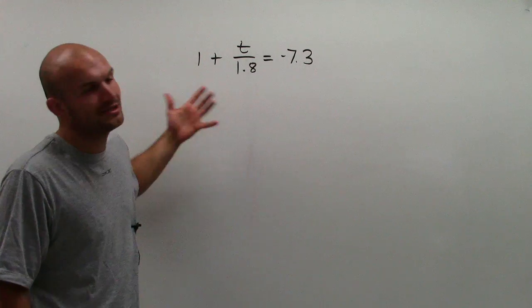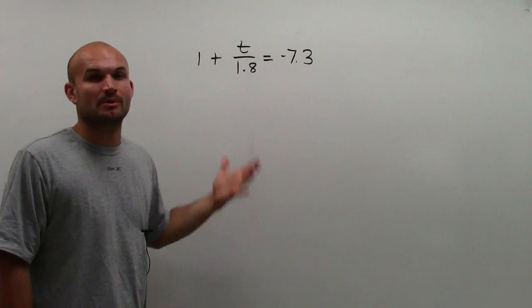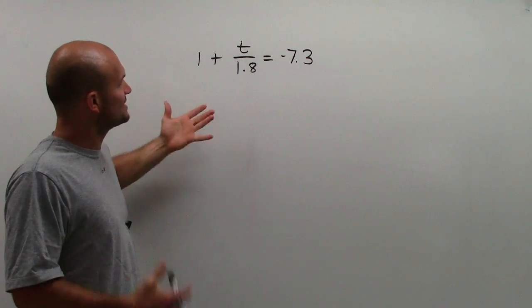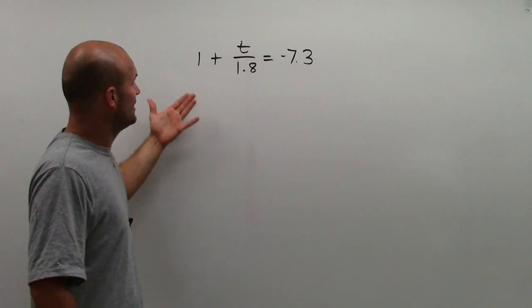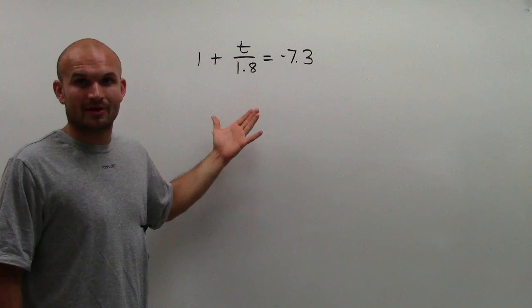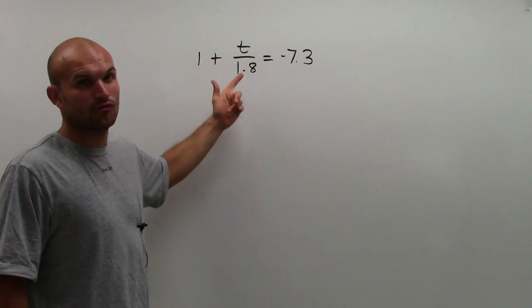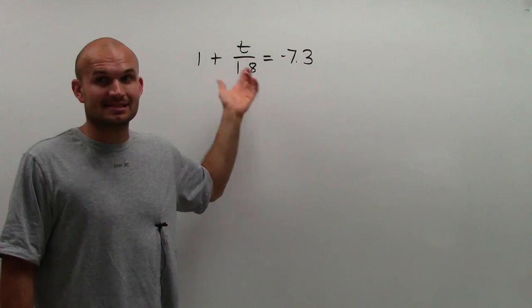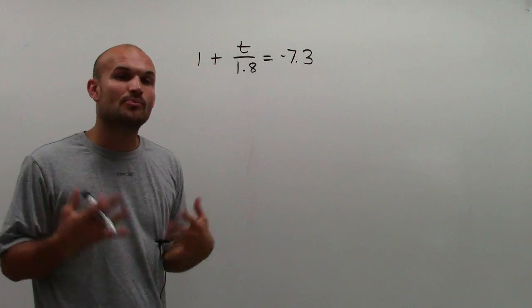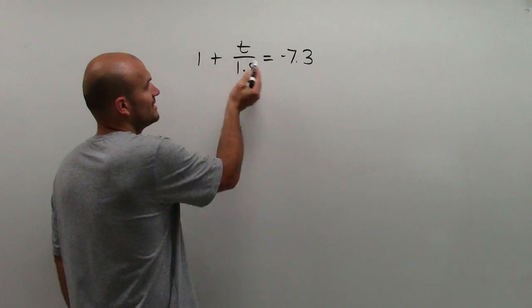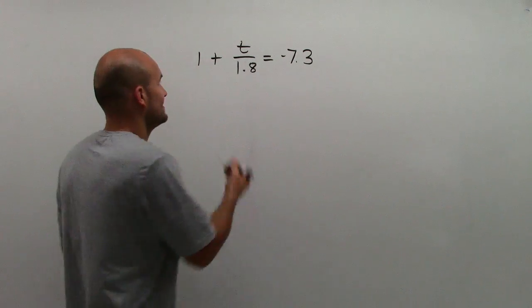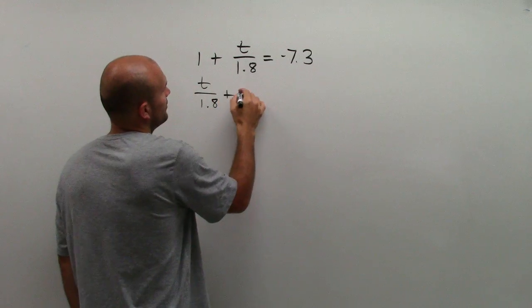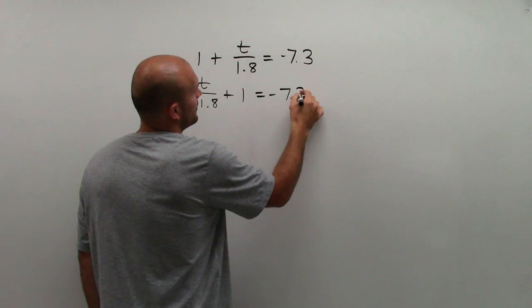First thing we need to do is look at what's happening to my variable. Addition and subtraction - I need to undo it. I see that I have addition, but it's not very clear what I'm adding. I have 1 plus t over 1.8. I'm adding t to something, but what am I adding to t? Well, remember, the commutative property of addition states that the order doesn't matter when adding. So I can write this as t over 1.8 plus 1 equals negative 7.3.